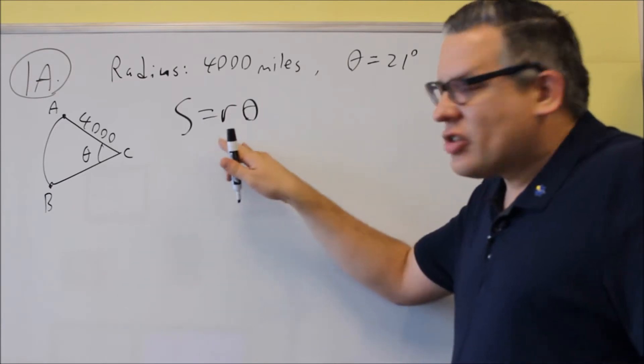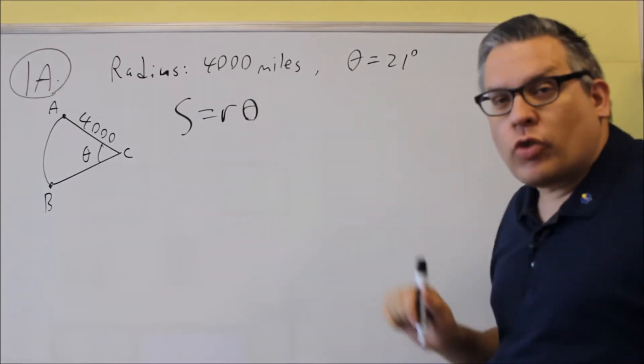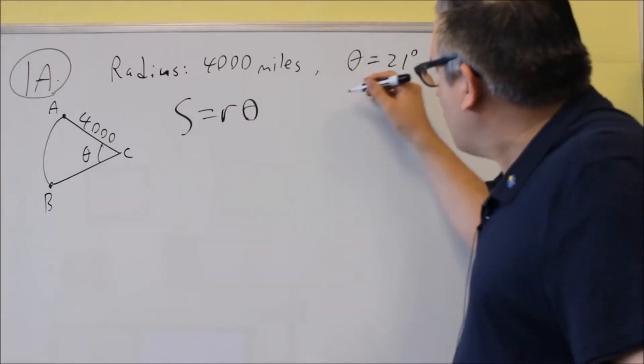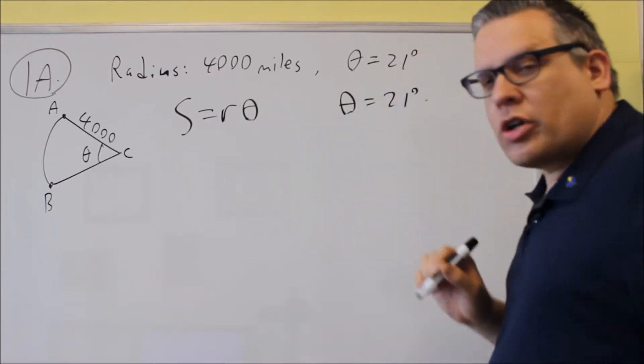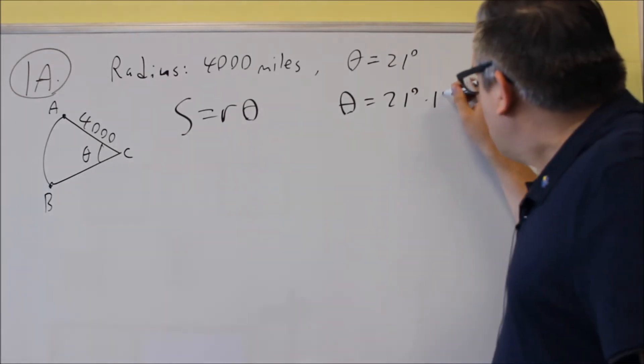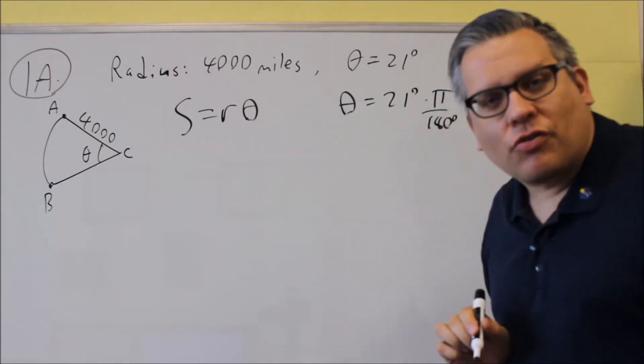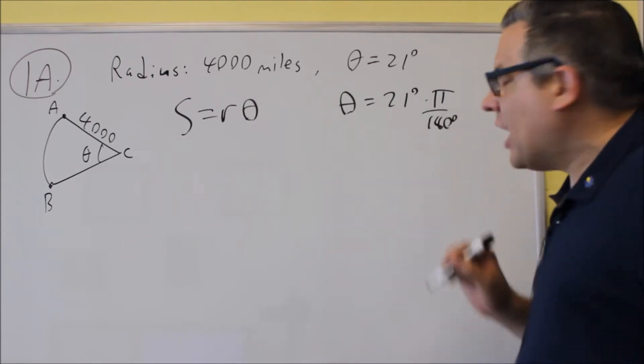So when we put this into the formula, we want to make sure that's in radians. So that's the first thing we'll do. We're going to take the theta is equal to 21 degrees, but we're going to multiply that by pi over 180. That's the conversion formula for it. We'll multiply by pi over 180.